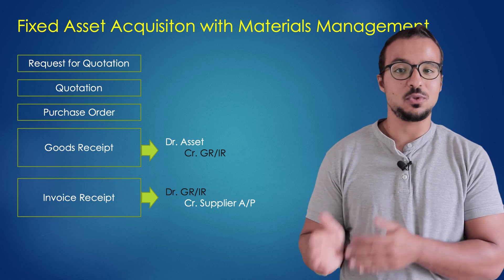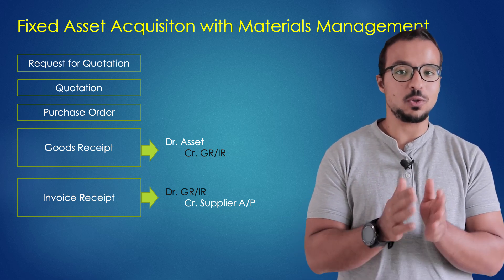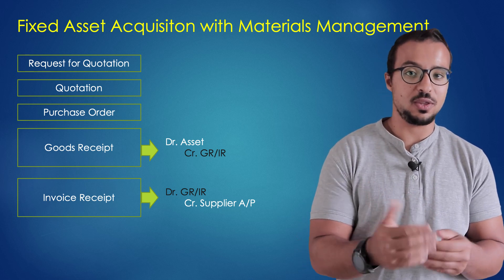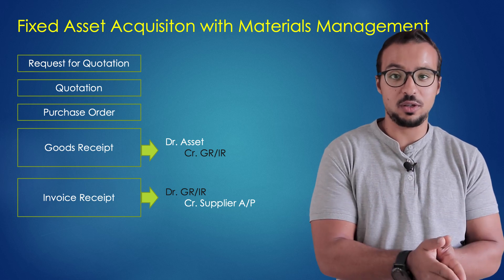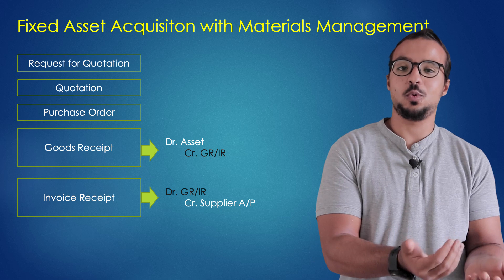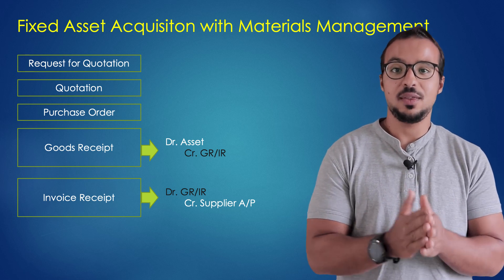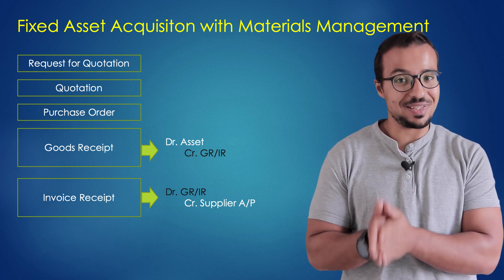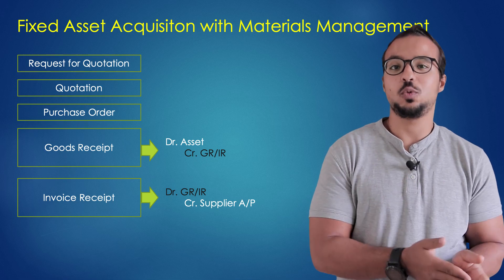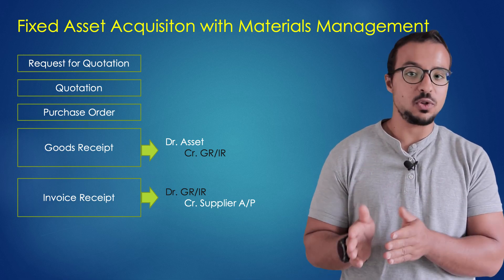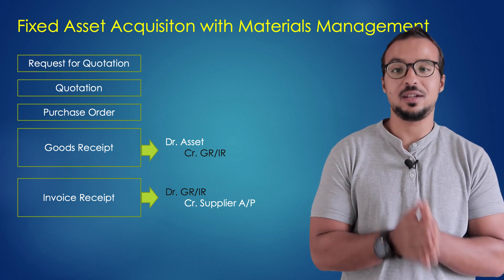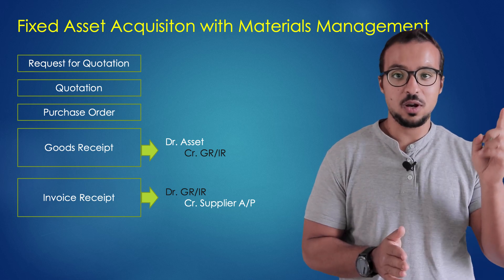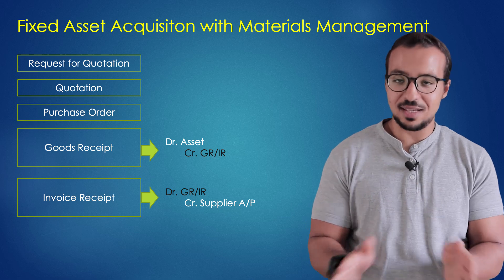The third process is fixed asset acquisition through materials management. This follows the same sequence as the standard purchasing process. We start by creating a request for quotation sent to the supplier, the supplier responds with a quotation, then we create a purchase order and do a goods receipt. The goods receipt posts a debit to the fixed assets account and a credit to GRIR. Then we move to invoice receipt, posting a debit to GRIR and a credit to the supplier. This process will be explained in detail in a separate video.